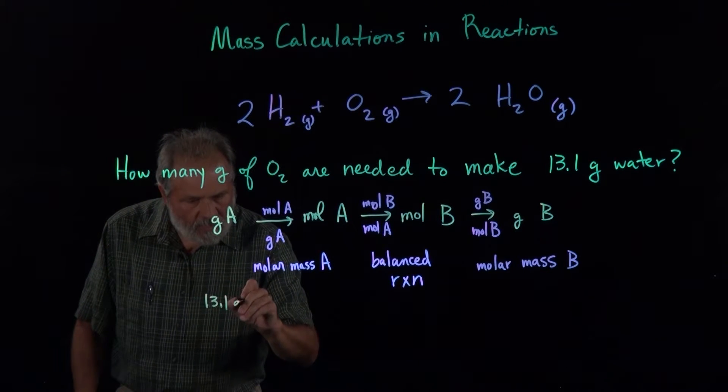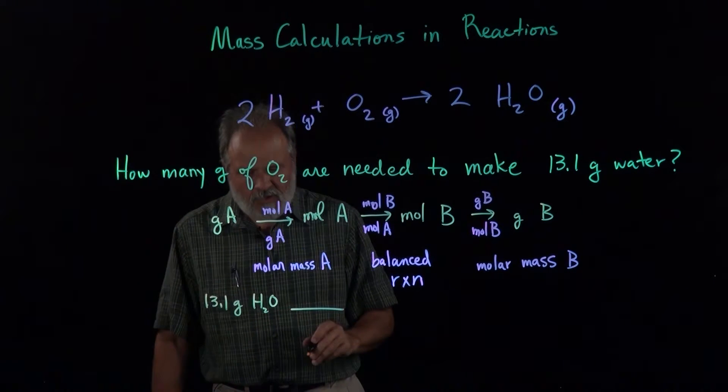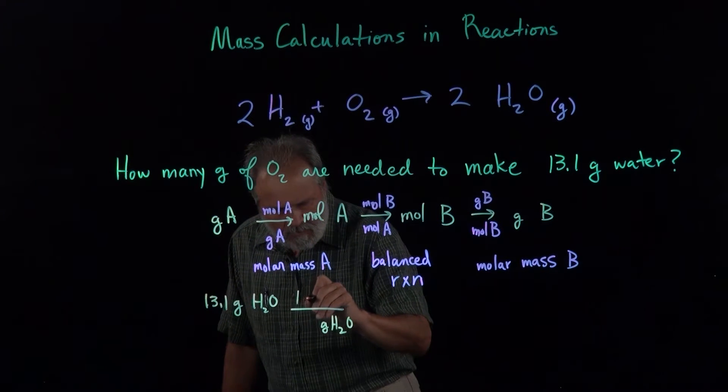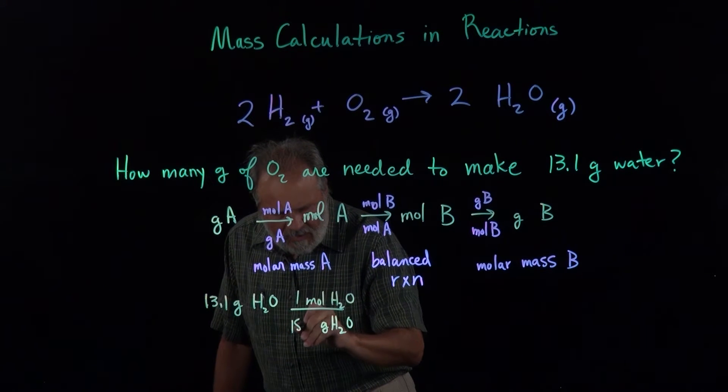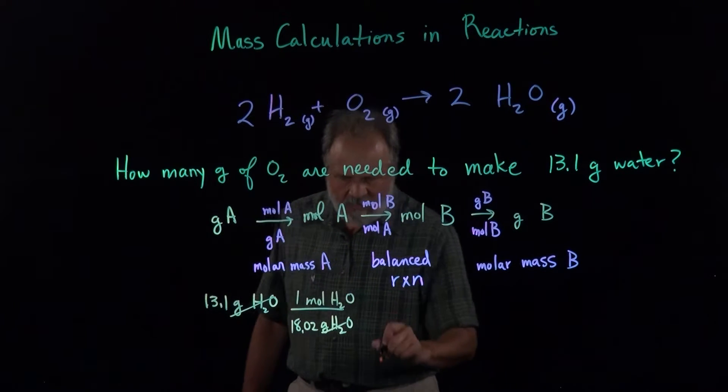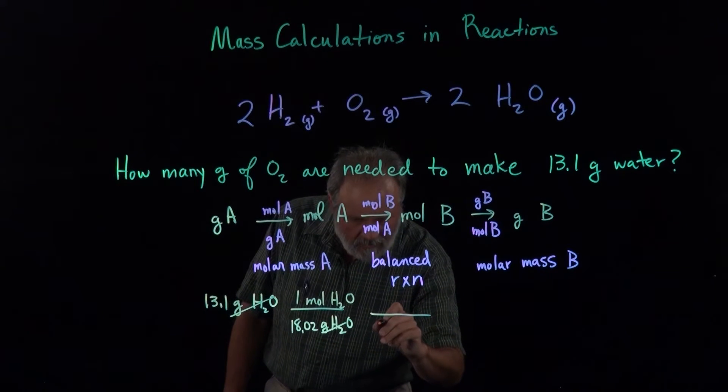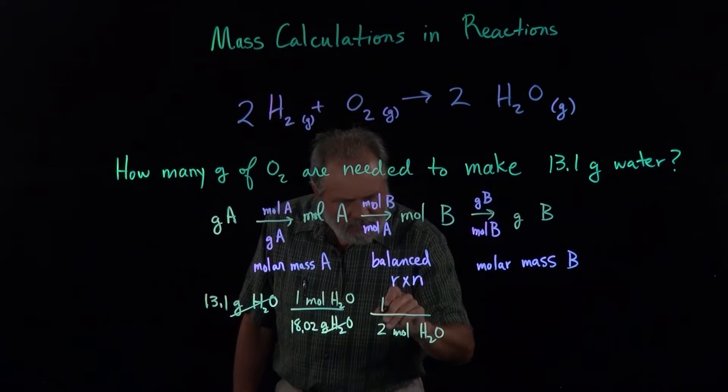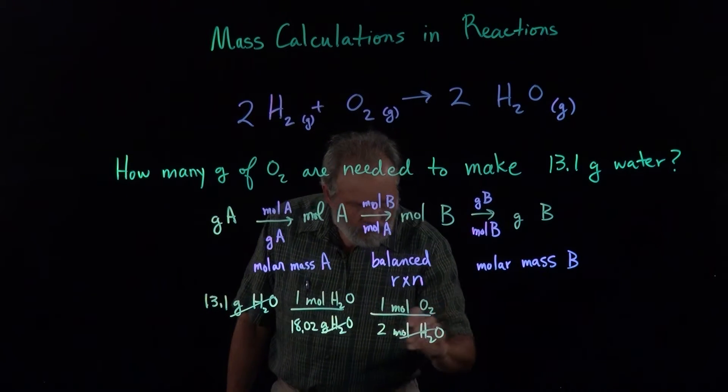13.1 grams of water. Multiply that by the molar mass with the grams in the denominator. One mole of water is 18.02 grams of water. Grams of water cancels. Now we have moles of water. Now we use the balanced chemical equation. Two moles of water is equivalent to one mole of O2.